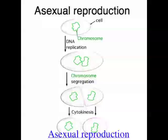Another type of asexual reproduction is budding. This is very similar to binary fission, but instead of the cytoplasm splitting equally, one of the organisms will end up with a slightly smaller cytoplasm. A difference is that budding can also actually occur in small multicellular organisms, such as a thing called a hydra.